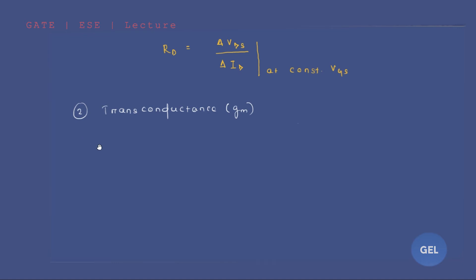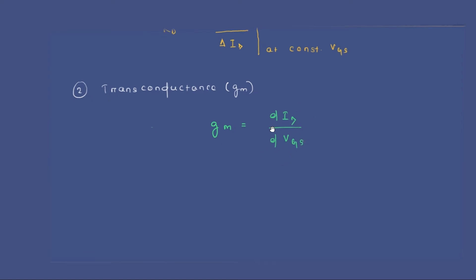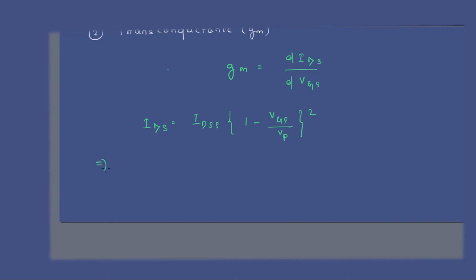Now, transconductance — very important. To get the transconductance value, it is the derivative of drain current with respect to gate-to-source voltage. We know the ID value from Shockley's equation: IDS = IDSS × (1 − VGS/VP)².